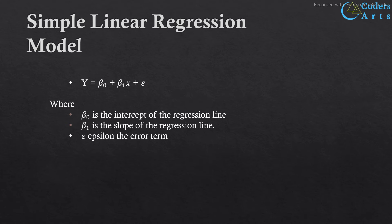Beta 1 is the slope of the regression line. The slope tells us two things: whether the line is increasing or decreasing, and how steep it is. The next term is epsilon, which is referred to as the error term. It exists in our prediction model because as good as our model is, there is always a random error term that cannot be accounted for.